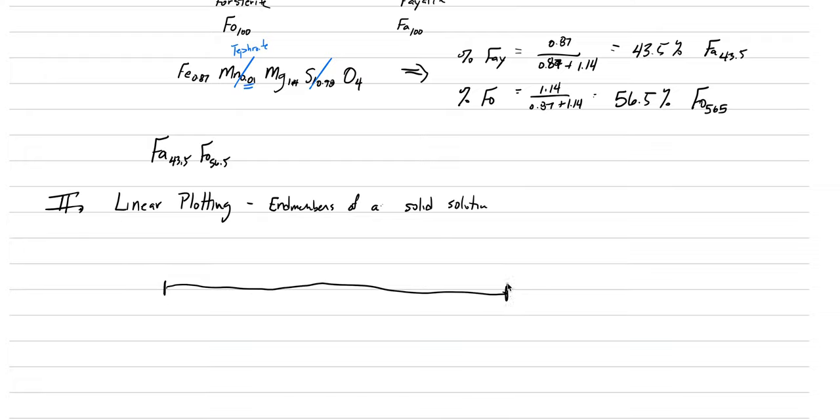In linear plotting, we just graph the end-members of a solid solution. It's just plotted along a line. This example would be - draw the straightest line you can here. We would plot along a line where this end is Fo100, and here this would be Fo0. This would be Fo50 right here in the middle. So find Fo90, that's Fo90. Where would our rock plot? Our rock plots at Fo56.5. You go Fo50, Fo56, bingo. That's where our Fo56.5 would plot. But what about that fayalite 43.5? It's in the exact same place. Because if it's Fo0, it's Fa100, and Fo100 has to be Fa0. Fo50 is Fa50. So you can work in either direction, whichever one's easiest for you to do linear plotting.